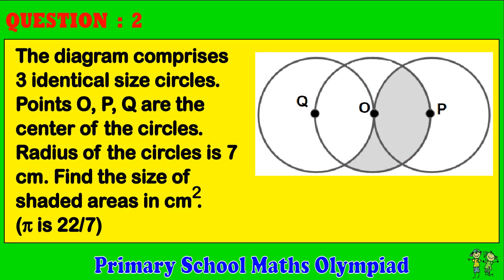Question 2. The diagram comprises three identical size circles. Points O, P, Q are the centers of the circles. The radius of the circles is 7 cm. Find the size of the shaded areas in cm². Pi is 22 over 7.